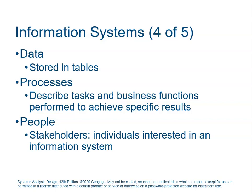When we talk about processes, these are the tasks and functions we need to perform to achieve specific results — the rules in how we operate. And people: these are our stakeholders, individuals interested in an information system. A cashier may not feel particularly interested in the register they use, but they're definitely a stakeholder because they need to operate it for their job and for customer satisfaction. Stakeholders are really anybody who interacts with this information system.